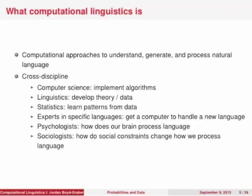It's a very interdisciplinary subject. We need computer science to implement these algorithms. We need linguistics to give us the underlying theory and the data we need to make these things work. We need statistics to get information from data. We need experts in specific languages to help us understand Navajo, Inuit, or Hindi. And we also need sociologists, because language is so intricately connected to the social processes that govern human interaction.